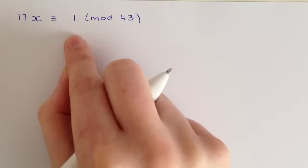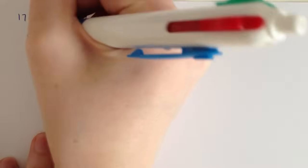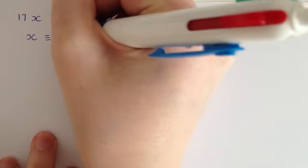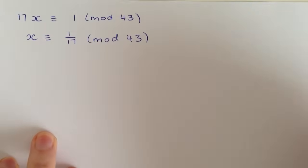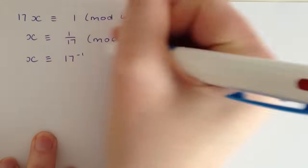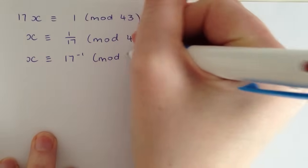So to get x on its own, we just take 17 over the other side. That will give us 1 over 17 mod 43, and that's the same as saying x is equivalent to 17 to the power of negative 1, mod 43.